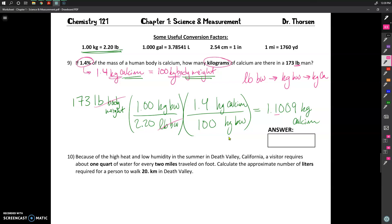And so that means our answer should be in two sig figs. Even though our weight that we started with had three sig figs, this percentage is limiting that. Okay, so my final answer then would just be 1.1 kilograms of calcium.